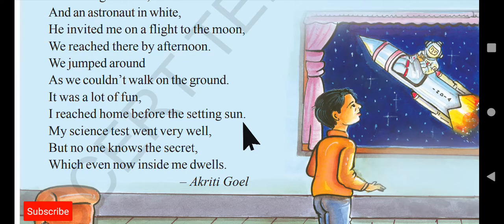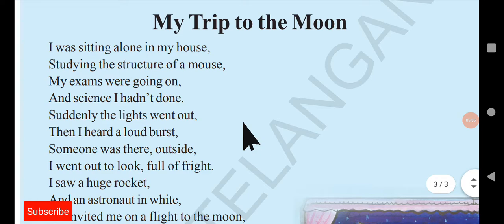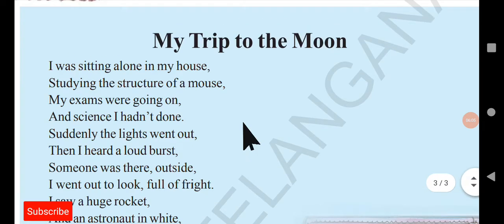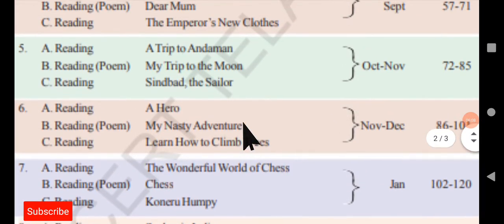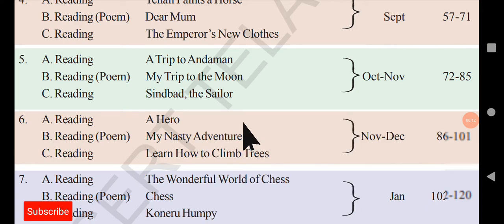This is a small and beautiful poem written by Akruti Goel. Once you read it you will understand it very well — it is in very simple lines with a beautiful AABB rhyming scheme and an adventurous tone. In the next video I will be teaching you Reading C, which is 'Sindbad the Sailor.' Please subscribe to my channel and click the bell icon to get notifications. Take care, God bless you.